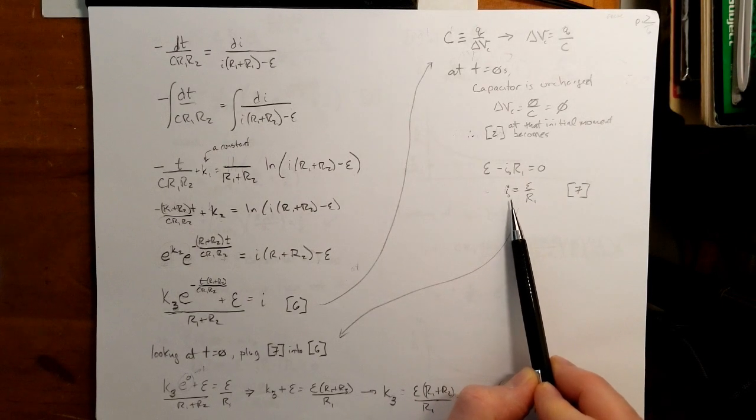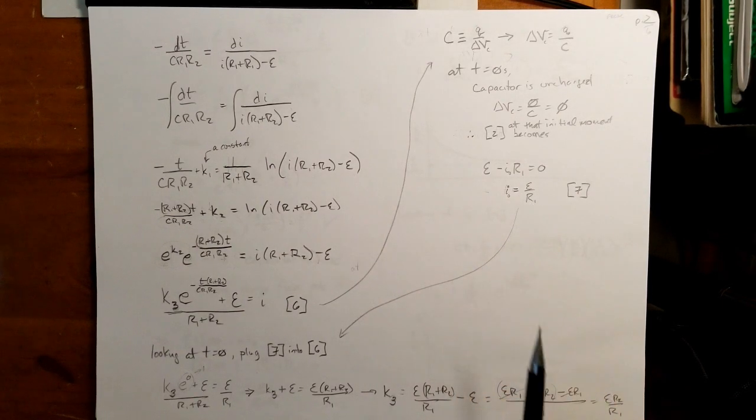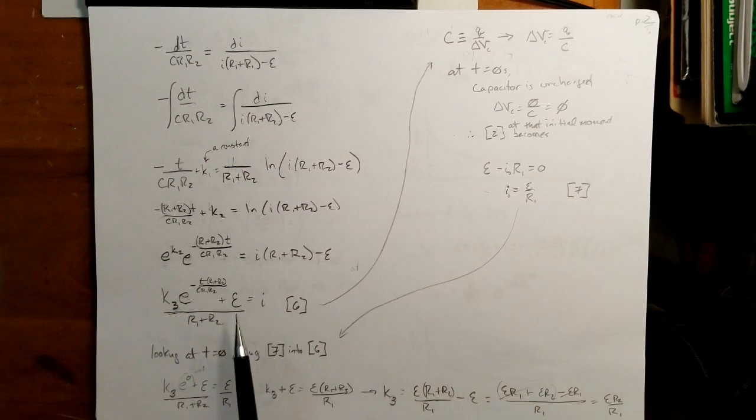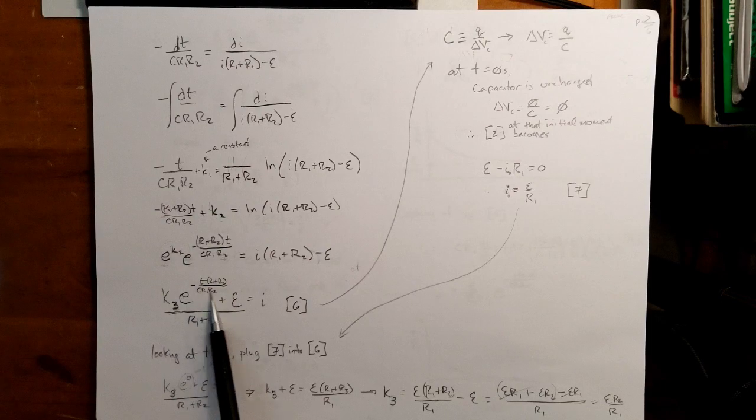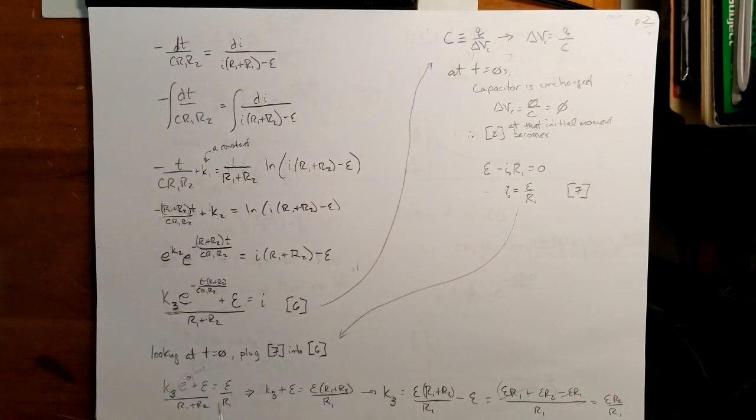So I initially is just epsilon over R1. If I plug that into here, looking at time is equal to zero seconds, then, well, if time is zero, that whole exponent becomes zero, and E to the zero is one. So I have some constant plus epsilon over R1 plus R2, which is just equal to epsilon over R1. Again, we're looking at the condition, the boundary condition of time is equal to zero. And then we can solve for K3.